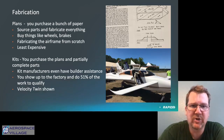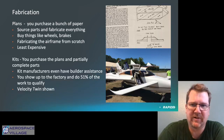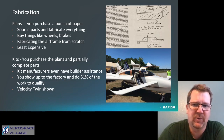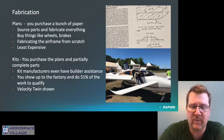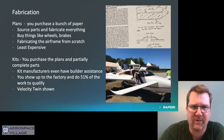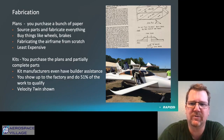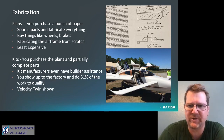With kits, you purchase the plans and partially completed parts — enough to qualify for the 51% rule. Quick builds have a lot of the work done for you, but you still have to finish it. It greatly decreases the time you spend, but increases the cost. The picture here is from Sun and Fun 2017 — it's a Velocity Twin, a gorgeous, very high-performing aircraft with a canard design. There are also builder assistance programs where you go to the manufacturer and they help you along the way, ensuring you're doing enough to qualify for 51% of the work.